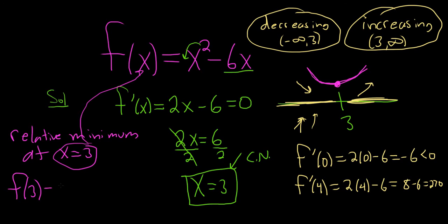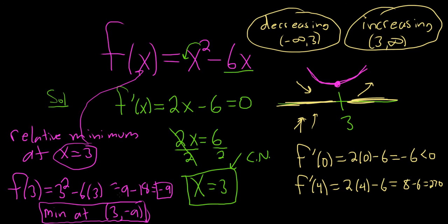So plugging it back into our original will give us 3 squared minus 6 times 3, which is 9 minus 18, which is negative 9. So that is the relative minimum. So negative 9 is the actual relative minimum. However, if you want the ordered pair, the minimum occurs at 3, negative 9. So that would be the point on the graph where we have a relative minimum. So that's it.